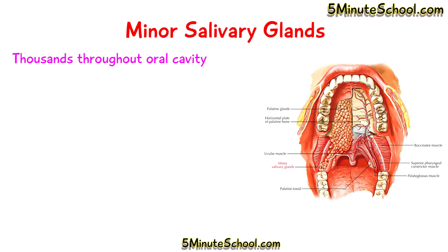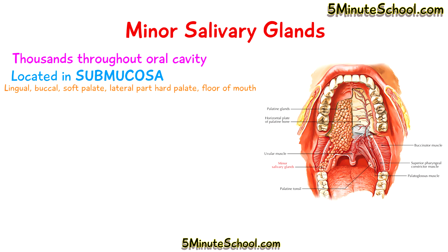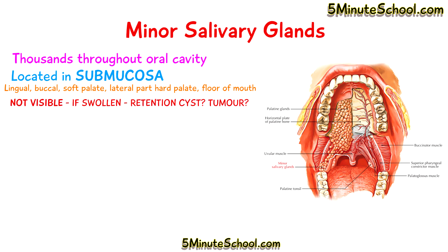Now we're going to talk about the minor salivary glands. There are thousands of them located throughout the oral cavity in the submucosa — that's in the lingual and buccal mucosa, the soft palate, the lateral portions of the hard palate, and in the floor of the mouth. The minor salivary glands are very small and difficult to see, so when they become visible it's sometimes due to a retention cyst or a tumour.